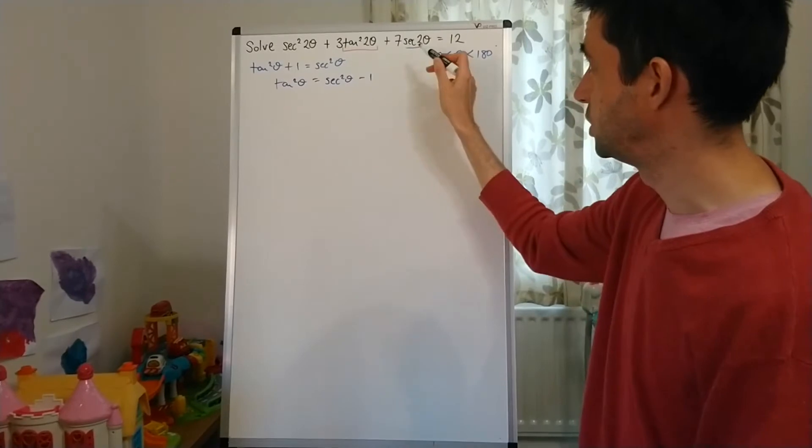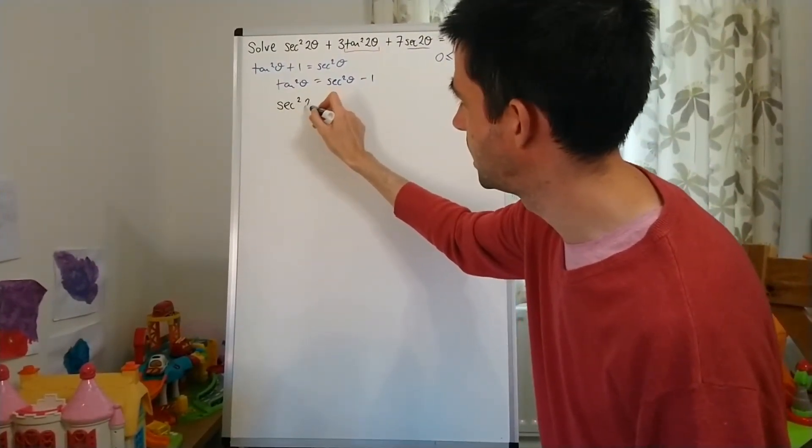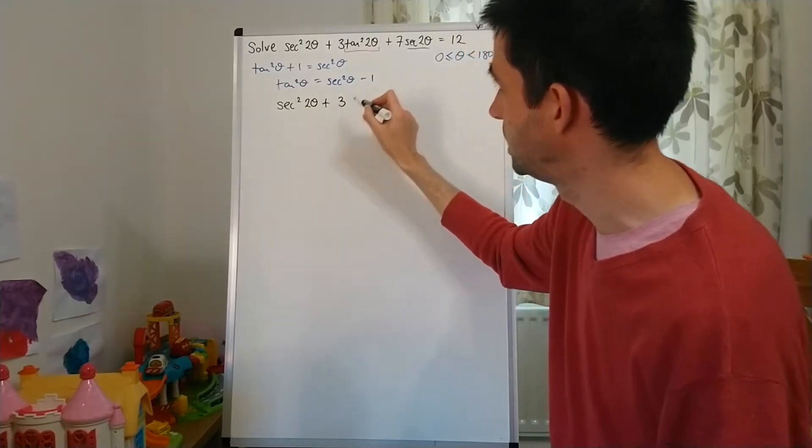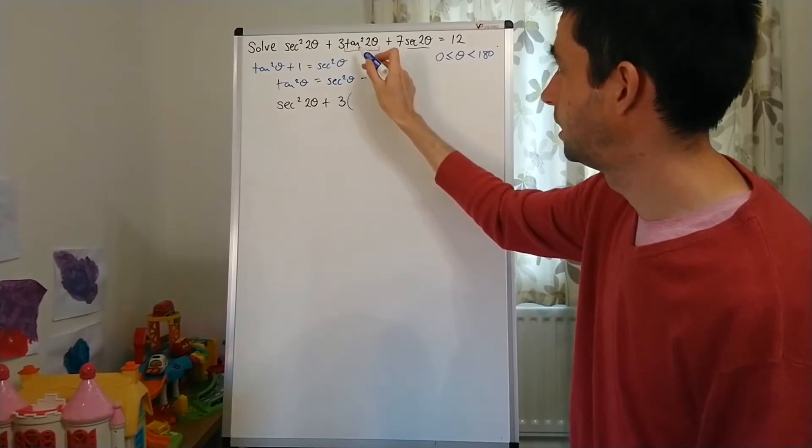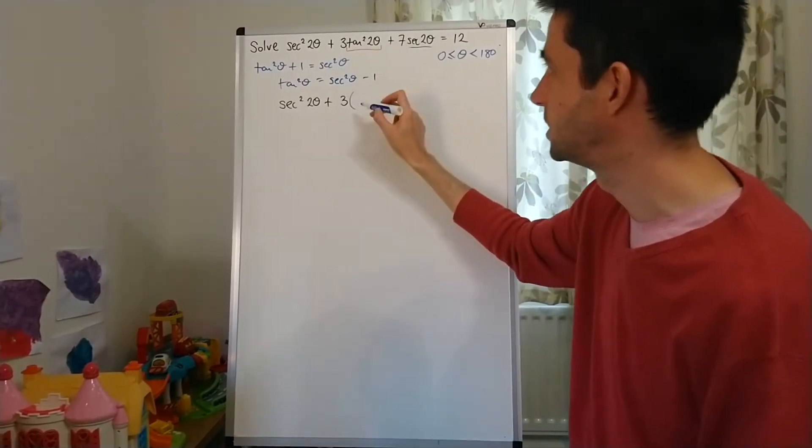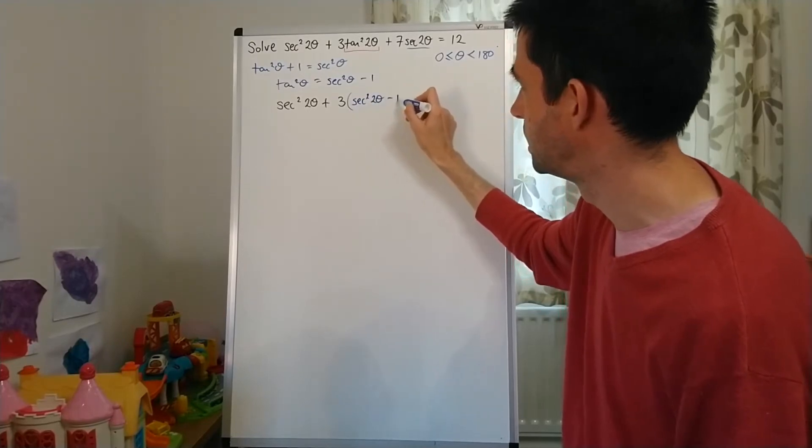So this equation, using that substitution, would become sec²2θ + 3 (don't forget that 3), but then tan²2θ is going to swap to sec²2θ - 1.